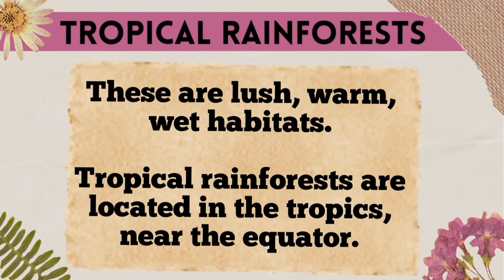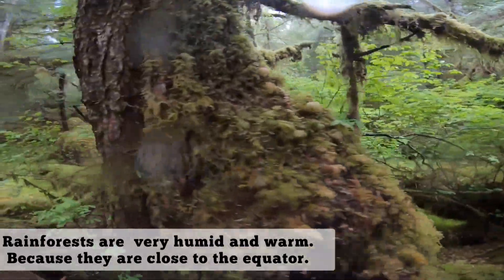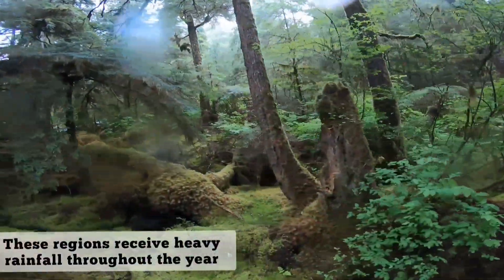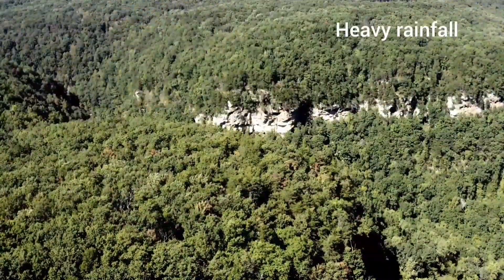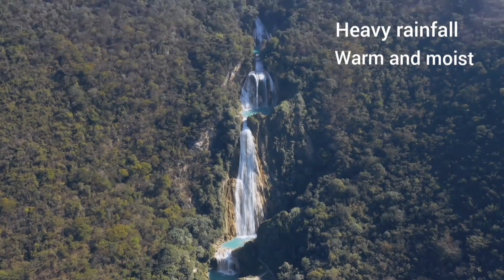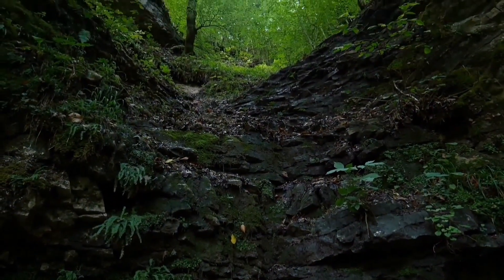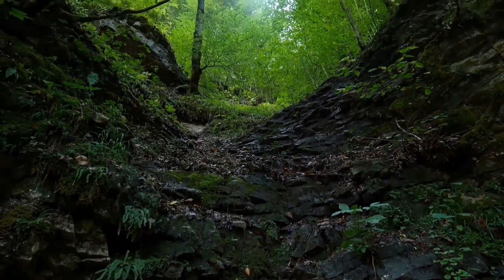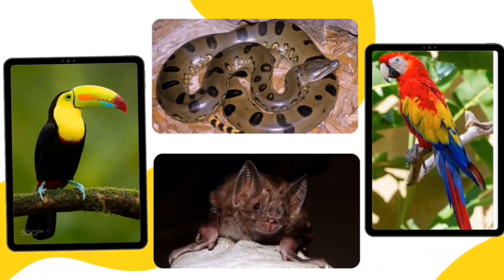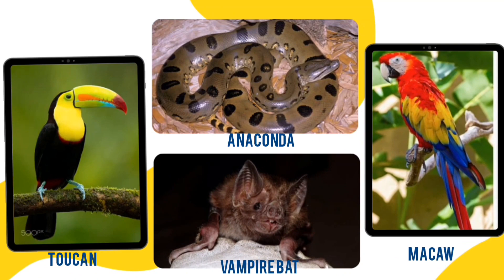Tropical rainforests are warm and wet habitats. These are located in the tropics near the equator, and these regions receive heavy rainfall throughout the year. Around half of the world's plant and animal species live in the tropical rainforest. Examples of organisms living in tropical rainforests are fern, bamboo tree, rubber tree, anaconda, toucan, macaw, and vampire bat.